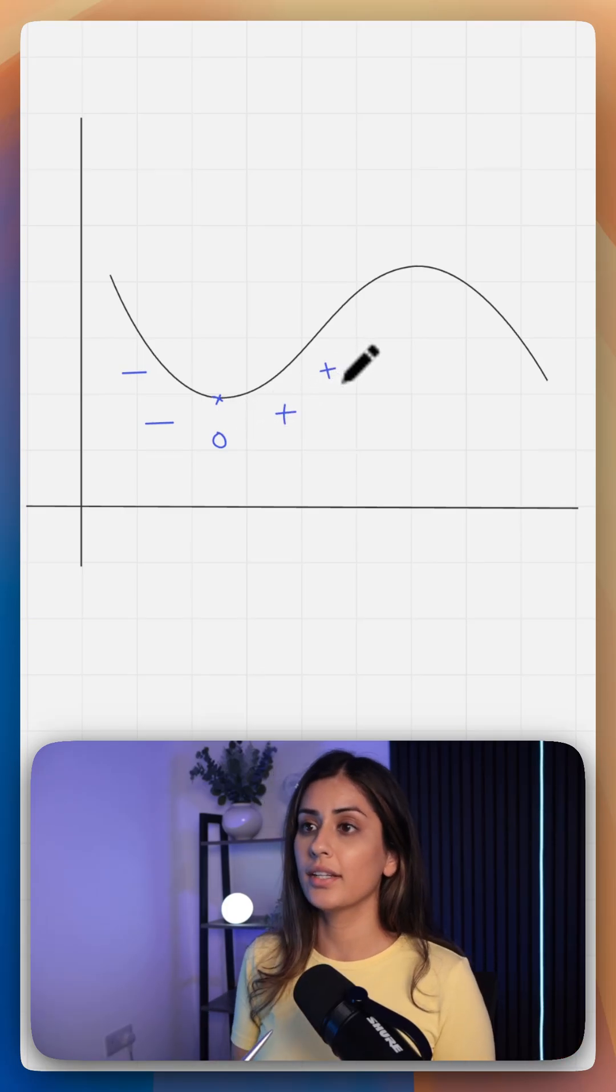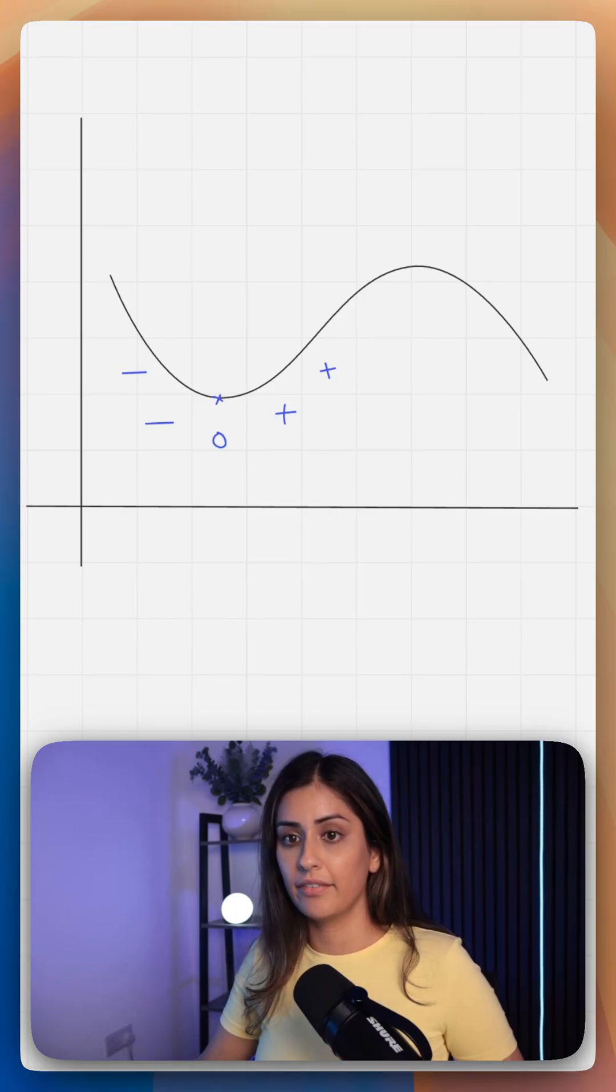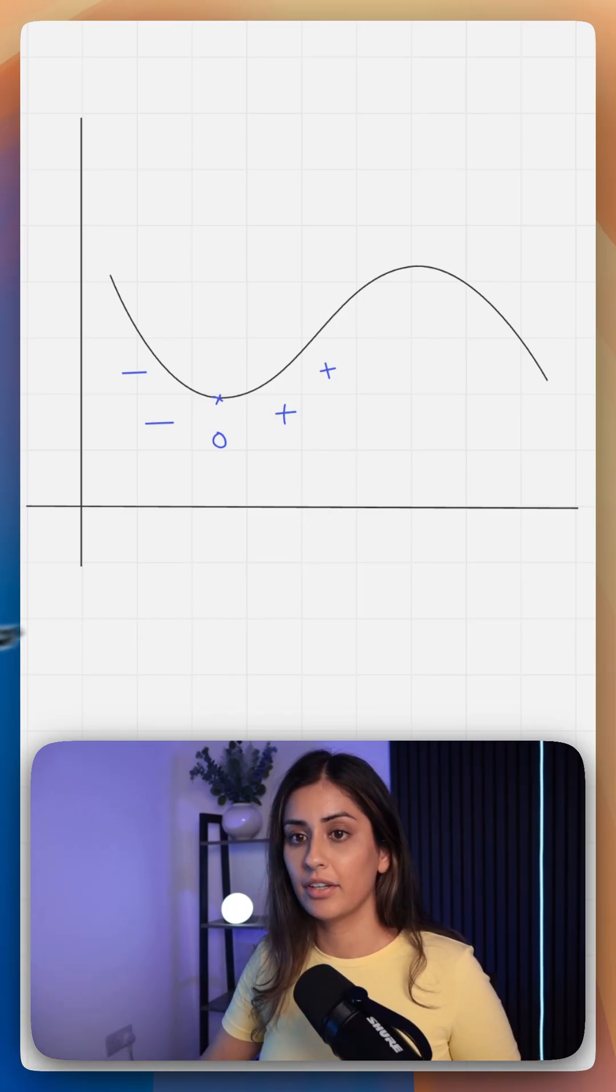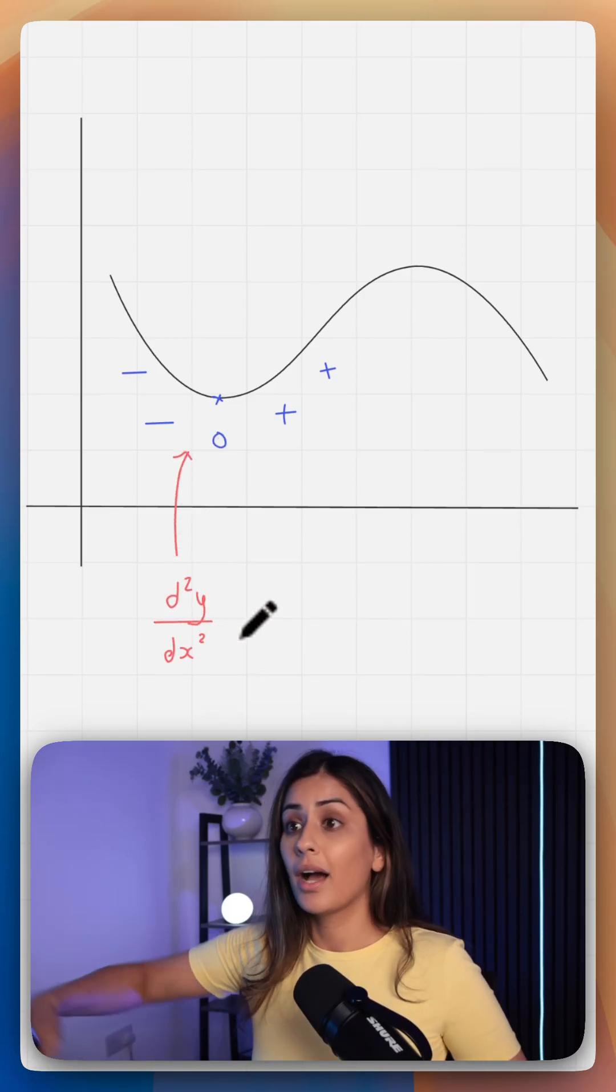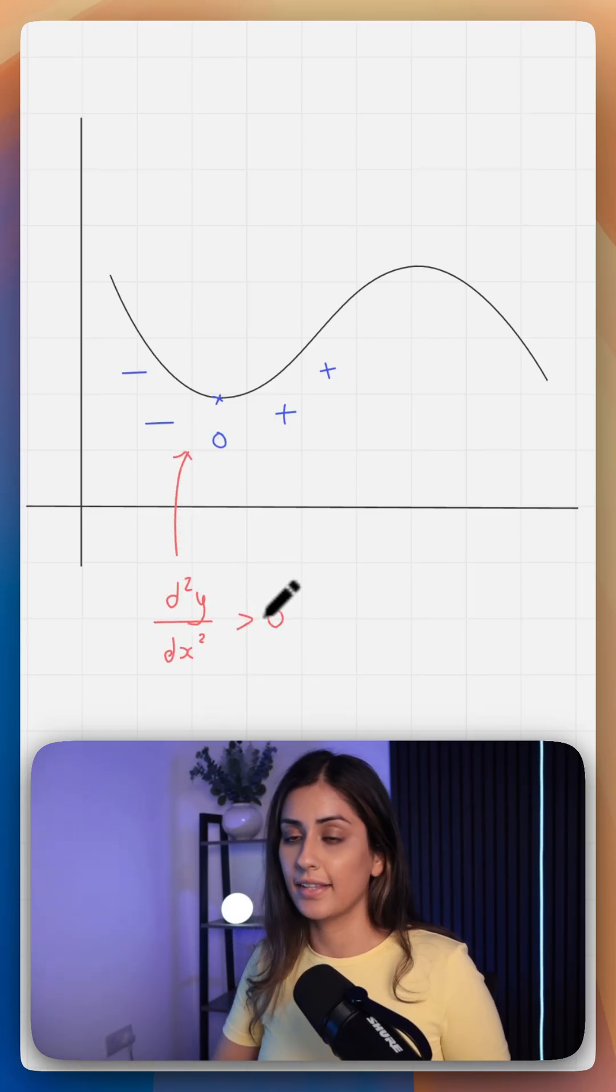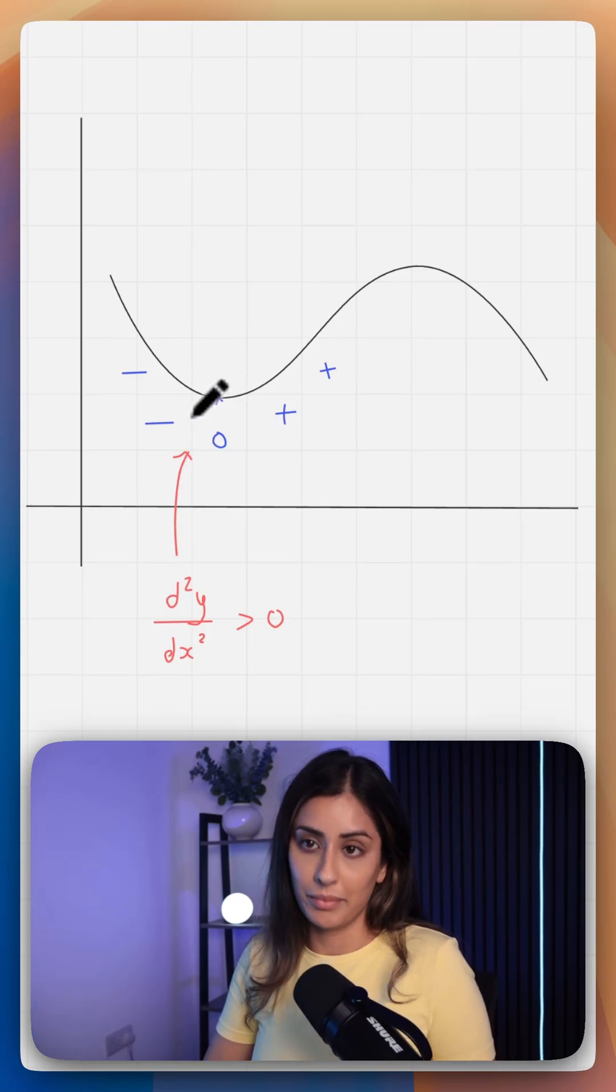Your gradient is changing from negative to positive. It's becoming positive. So your d squared y by dx squared at this point here is becoming positive. It's going to be greater than zero at your minimum point.